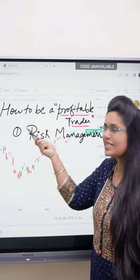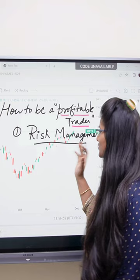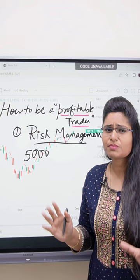How To Be A Profitable Trader Part 5: Risk Management — very important. Today we will see Risk Management. Suppose my risk is I don't want to make a loss in the month of more than 5,000.